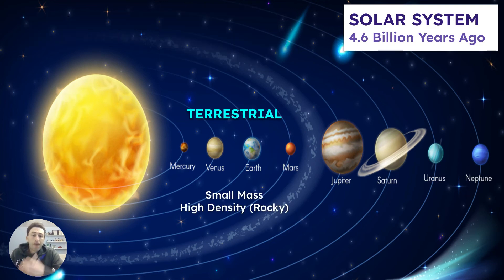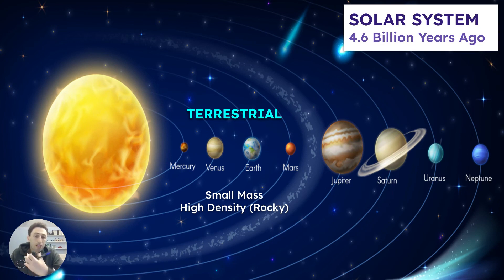We have eight planets in our solar system. The first four — Mercury, Venus, Earth, and Mars — are referred to as terrestrial planets. They are small in mass, smaller, and higher density, which means you could stand on them. So these are called terrestrial.